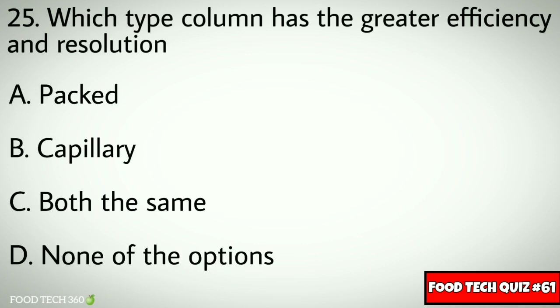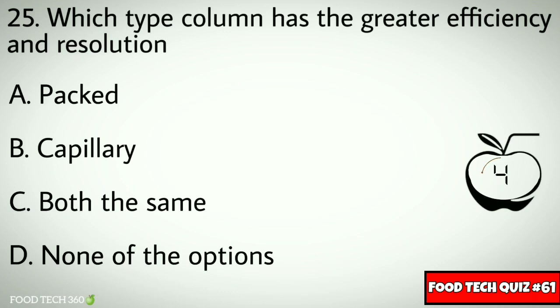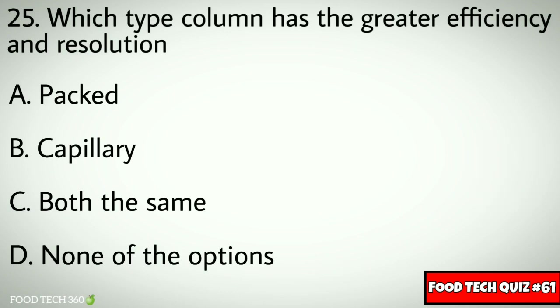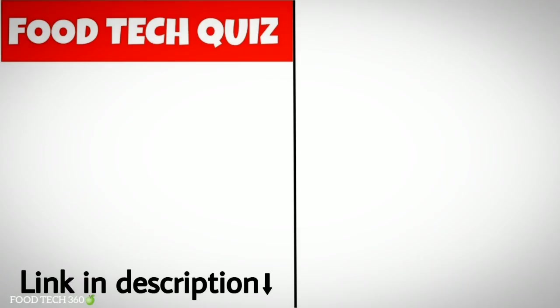Question number twenty-five: which type of column has greater efficiency and resolution? Options: a) packed, b) capillary, c) both the same, d) none of the options. Correct answer: b) capillary. If you have missed the previous videos, we have linked them in the description.